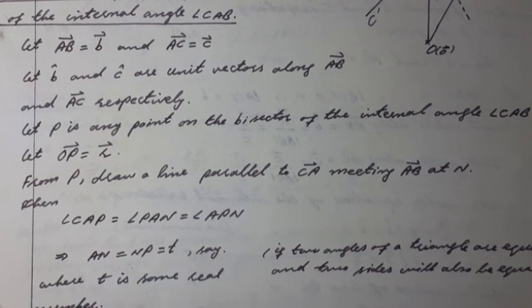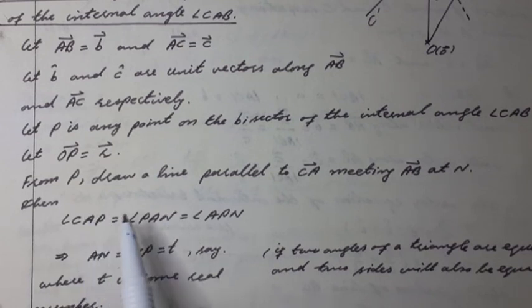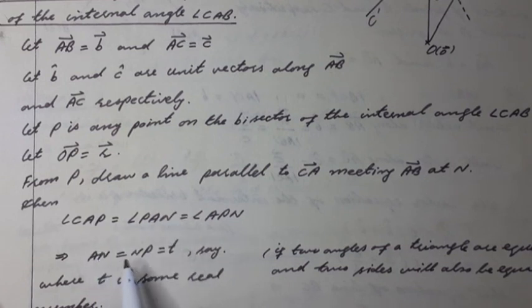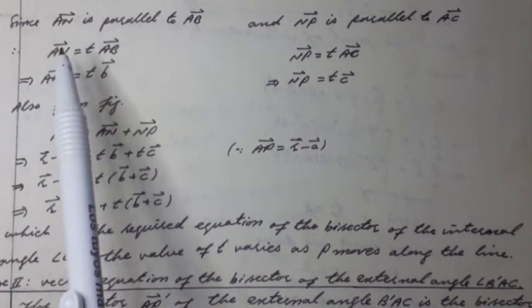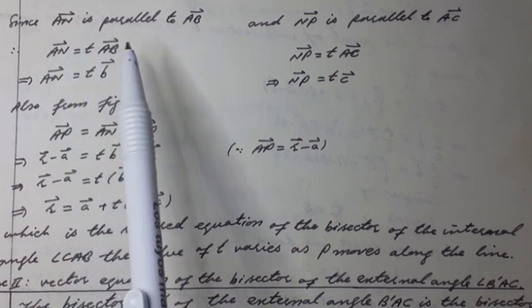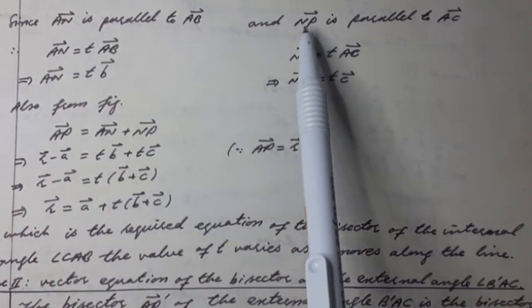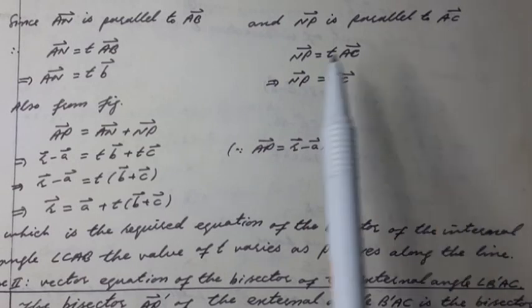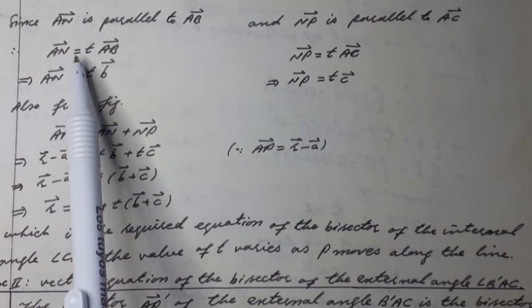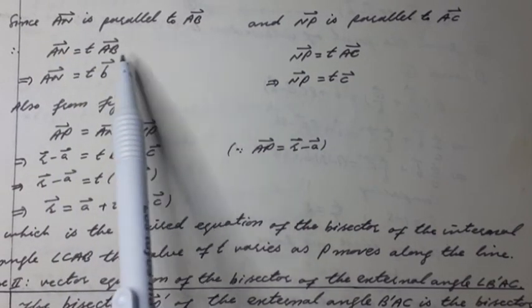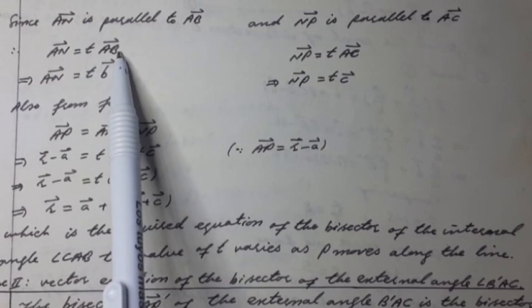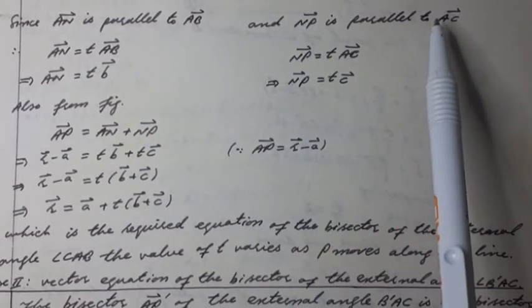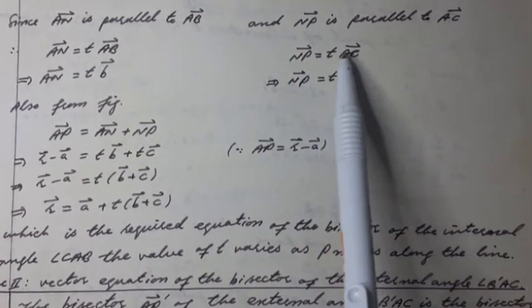This implies side AN equals side NP equal to T, where T is some real number. We note that if two angles of a triangle are equal, then its two sides are also equal. Since AN vector is parallel to AB vector and NP vector is parallel to AC vector.